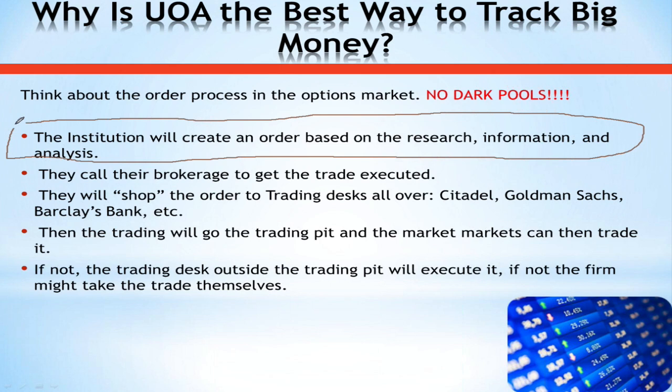A trader comes up with an idea — an institution says, 'We know X, Y, and Z, let's buy this big block of out-of-the-money calls.' Once they make that decision, they call their broker, who shops that order all over the place to market makers, on and off the floor, and other counterparties. If they can't find someone to take the other side of the trade, the broker may choose to trade it themselves. What's really important is that at no point throughout this process do they have the ability to send that order to a dark pool, because there is no dark pool for options.